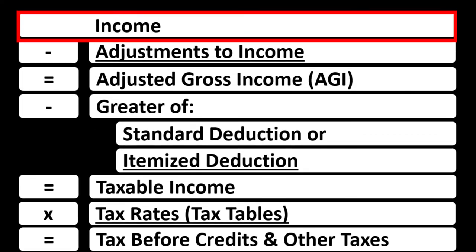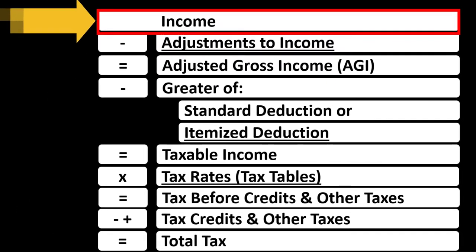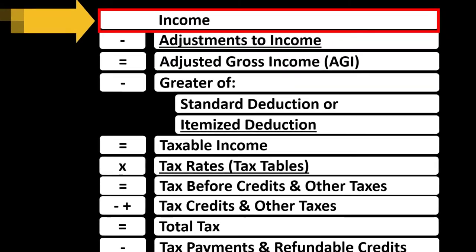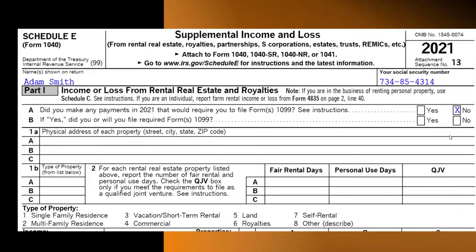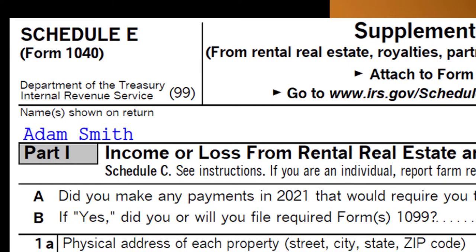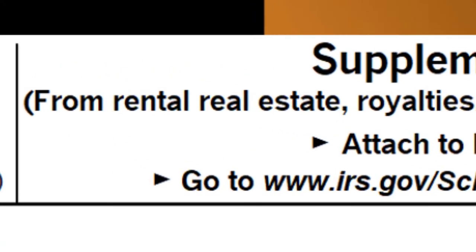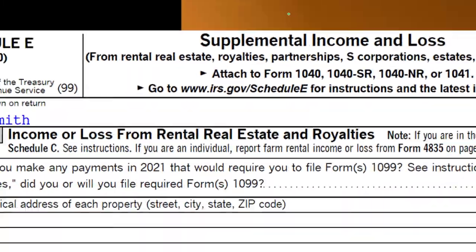The expenses are basically deductions. The net then rolls into line one income on the income tax formula and eventually onto page one of Form 1040. This is Schedule E — the income statement schedule, the supplemental income and loss schedule. We're focusing in on rental real estate, specifically personal use of a dwelling unit including a vacation home.